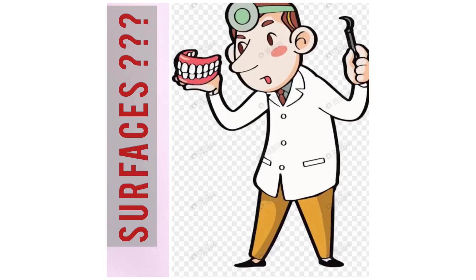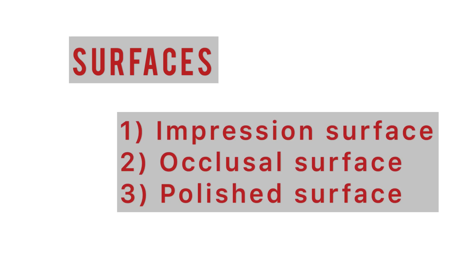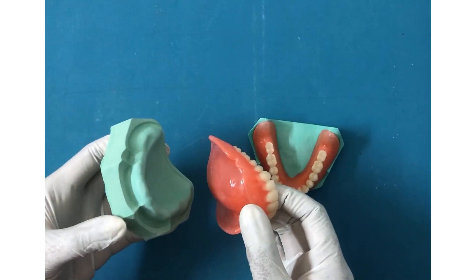Hello, welcome back. This is almost a continuation of the previous class. Today we shall see the surfaces that determine the success of your dentures. A complete denture has three surfaces, each one has an epic story of its own, but today we shall just identify them and see why they are so important. The surfaces are: one, impression surface; two, occlusal surface; and three, polished surfaces.